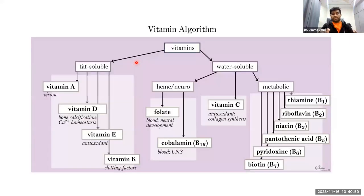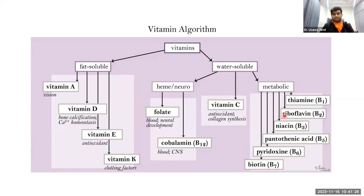Vitamins are classified based on solubility into water-soluble and fat-soluble types. Fat-soluble vitamins include vitamins A, D, E, and K. Water-soluble vitamins include the different types of vitamin B and vitamin C, as well as folate. Each vitamin performs specific functions in the body.